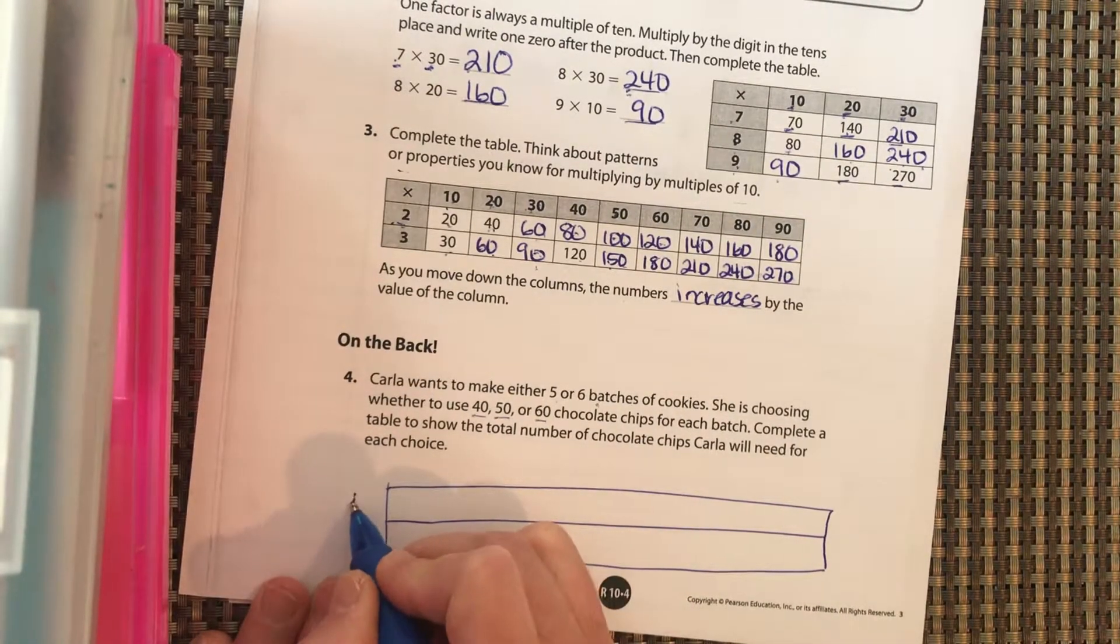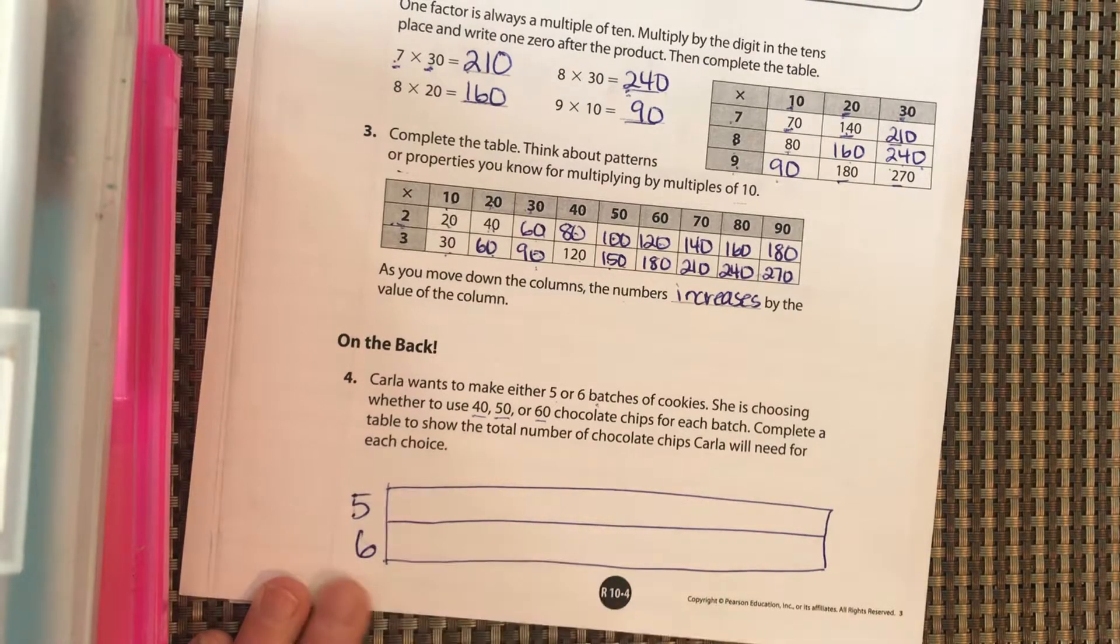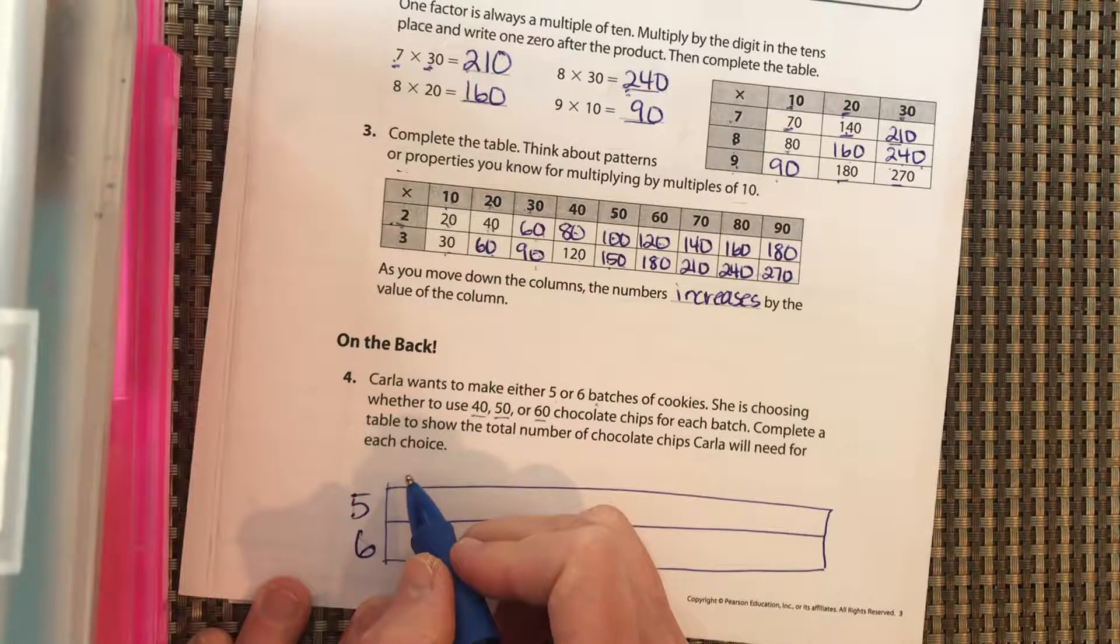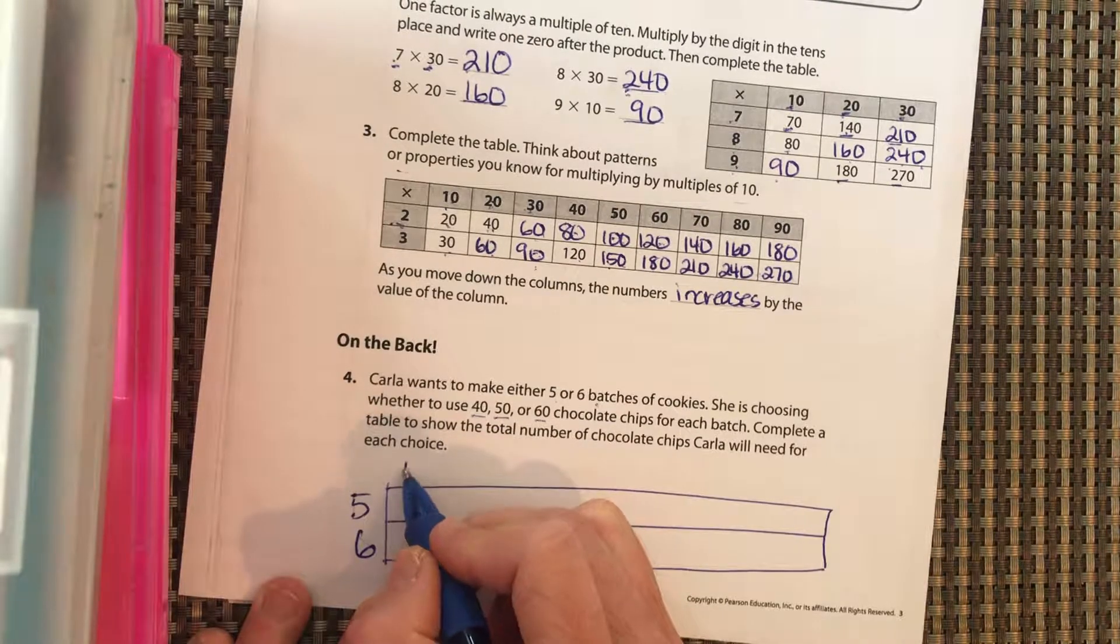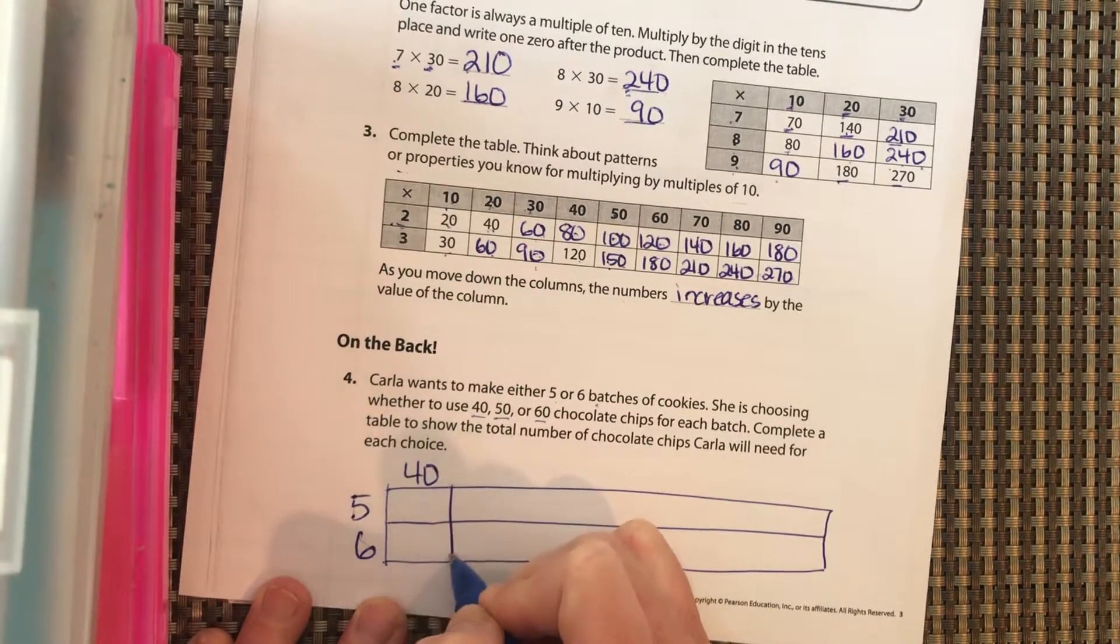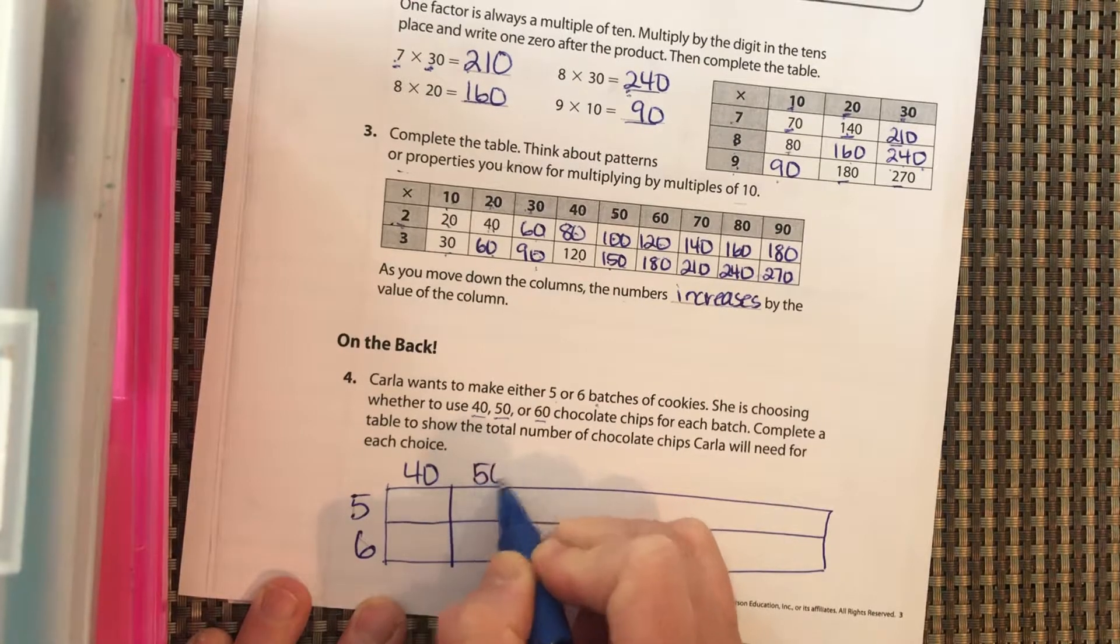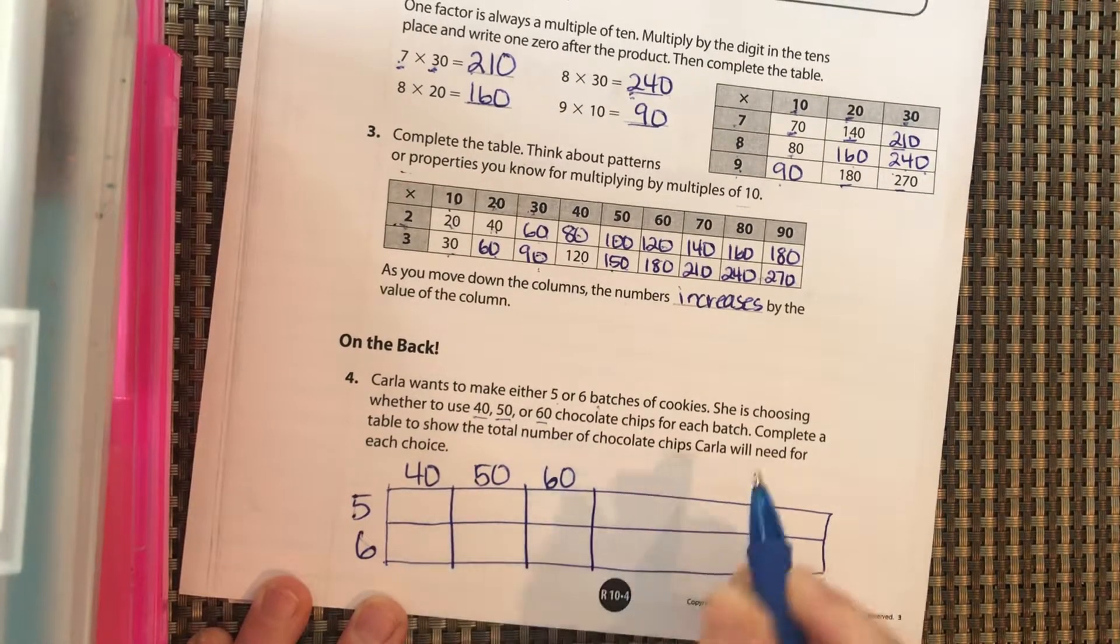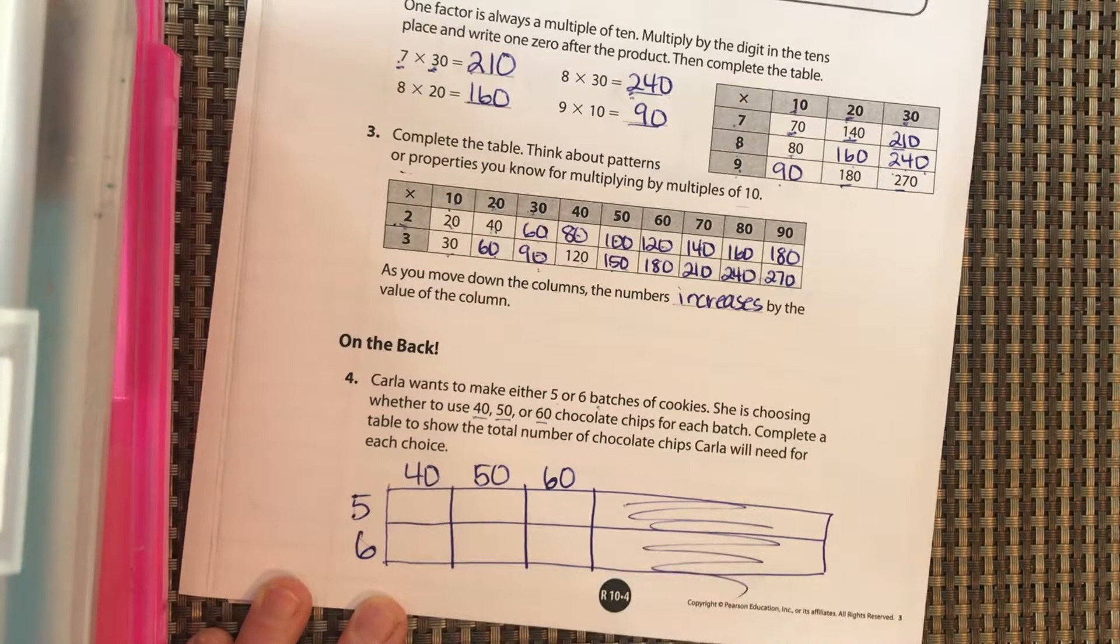Okay, she's either going to make five batches or six batches of cookies, and each time she's going to use 40 chocolate chips, 50 chocolate chips, or 60 chocolate chips. We don't need the rest of this over here.